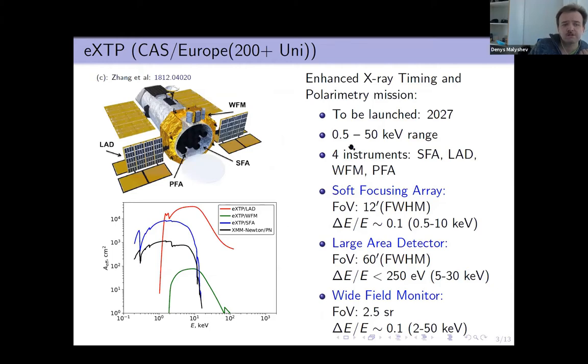The first one is eXTP planned to be launched in 2027. It will operate in 0.5 to 50 keV energy range. It will host four instruments: soft focusing array, large area detector, wide field monitor and polarimetry focusing array which is probably not the best instrument for dark matter specific studies.